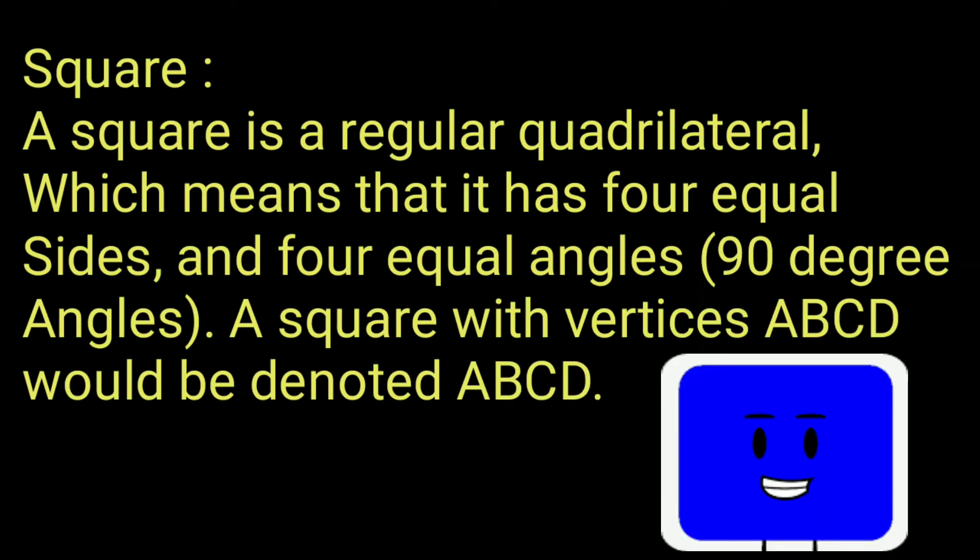Square: A square is a regular quadrilateral, which means it has four equal sides and four equal angles of 90 degrees. A square with vertices A, B, C, D would be denoted as ABCD.